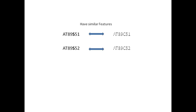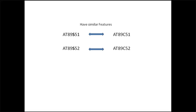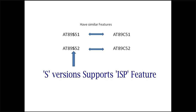Atmel's S51 and S52 are similar in all features when compared to the 89C51 and C52. For programming, the S versions of the IC support the ISP feature.